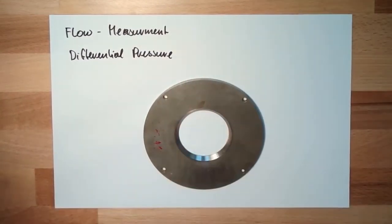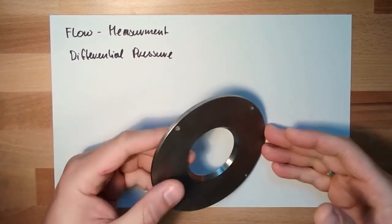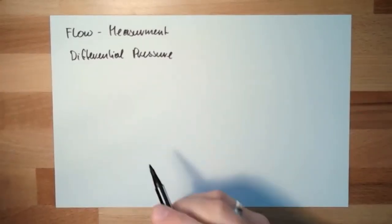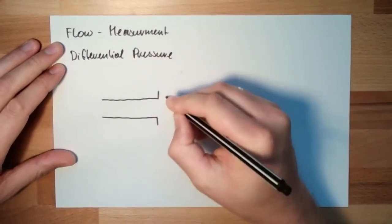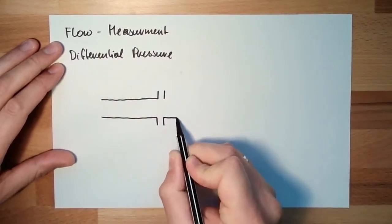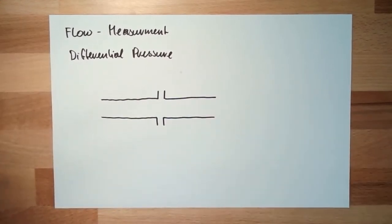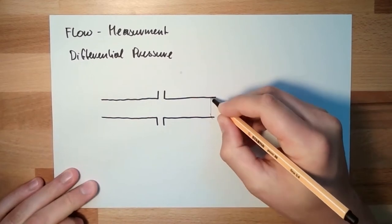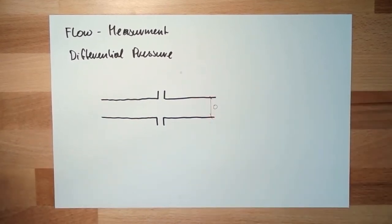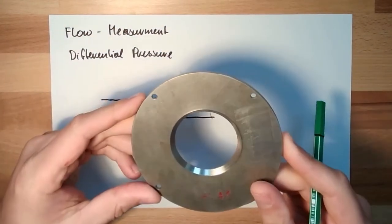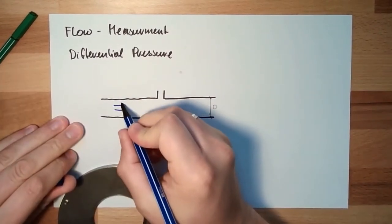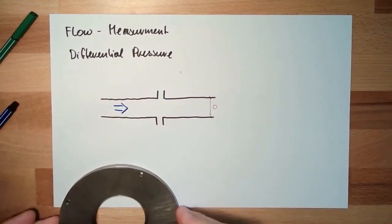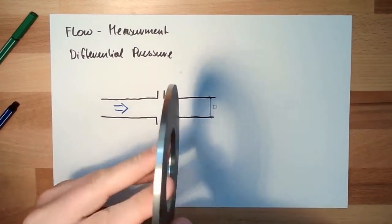So how does the differential pressure method of flow measurement work? How can this device help? We have a tube, there's a flange, and there's the next tube segment. The tube has a diameter, and inside here — if this is the flow direction — I insert this device.